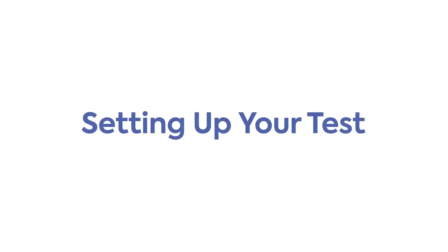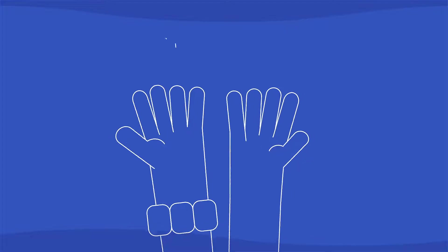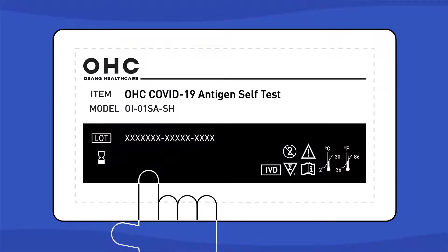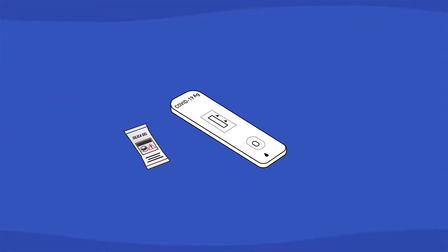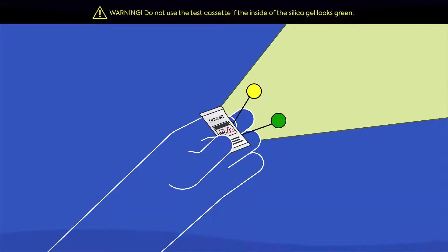Setting up your test. The kit should be used at room temperature, 15 to 30 degrees Celsius, 59 to 86 degrees Fahrenheit. First wash your hands with soap and water, and check the expiration date on the back of the foil pouch. Open the pouch and remove the test cassette and desiccant package. Place the device on a clean flat surface. Hold up the desiccant package to the light and make sure to check there are no green beads in the package.